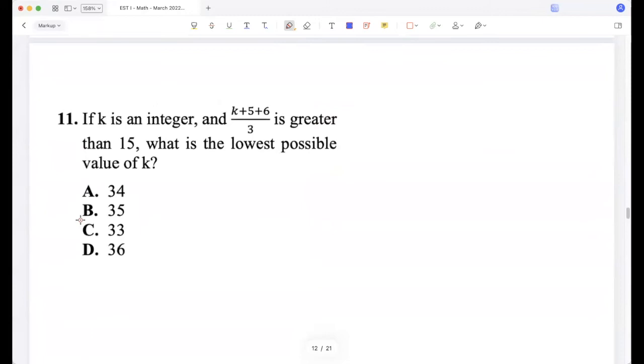If K is an integer and (K + 5 + 6)/3 is greater than 15, what is the lowest possible value of K? So (K + 11)/3 is greater than 15. So K + 11 is greater than 45. So K is greater than 34. So the lowest possible value will be 35.